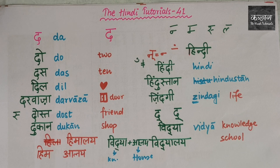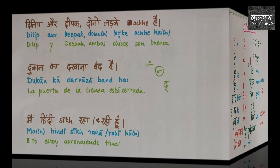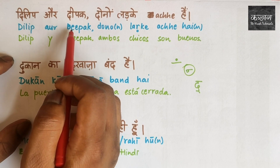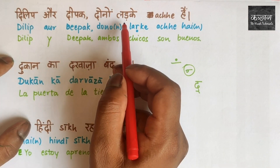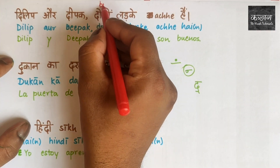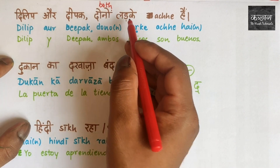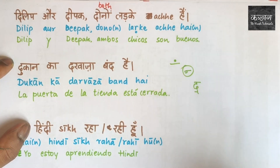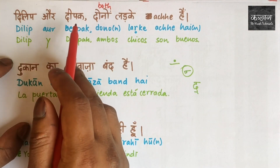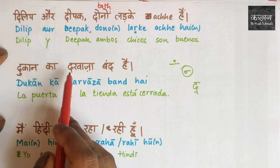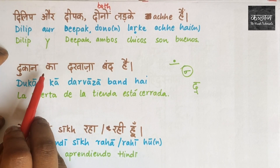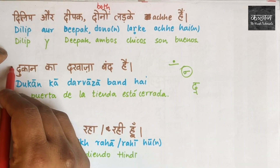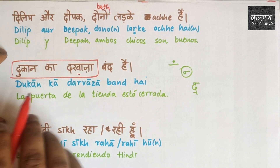Now let's see a few sentences with the dental D. First: 'Dilip aur Deepak' — Dilip and Deepak — 'dono ladke acche hain' — both the boys are good. Second: 'Dukaan ka darwaza band hai' — the door of the shop is closed.